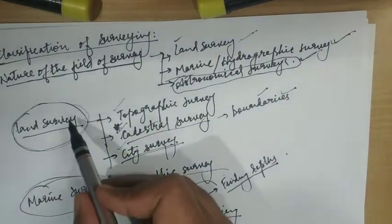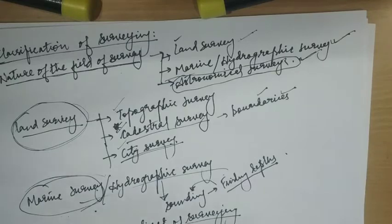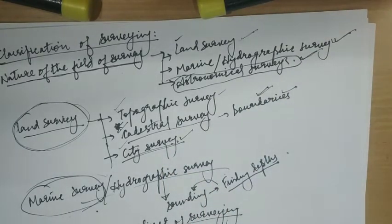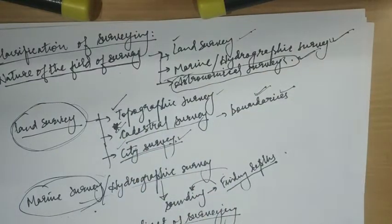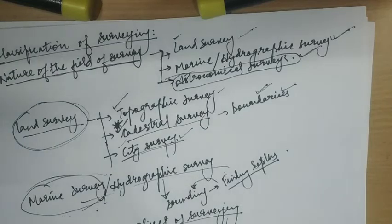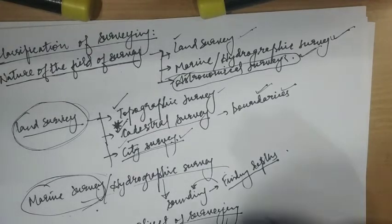Land survey involves measurement of various objects on land. It can be further classified as topographical survey, cadastral survey, and city survey. Topographical survey consists of measurement of various points to plot natural features such as rivers, streams, lakes, hills, and forests, as well as man-made features like roads, railways, towns, villages, and canals. Cadastral surveys are used for making boundaries of municipalities, states, etc., and surveys made to mark properties of individuals also come under this category.